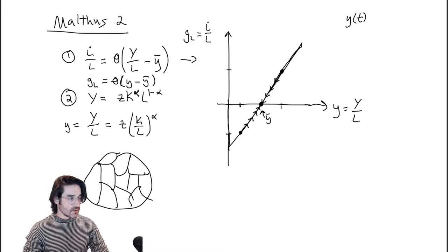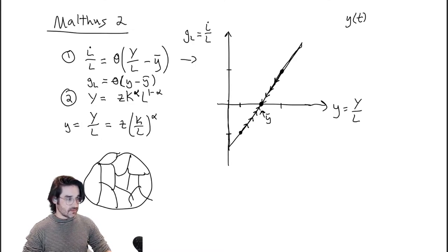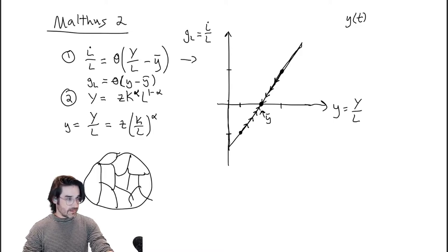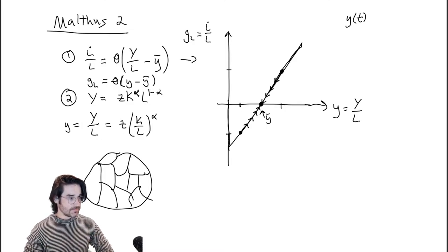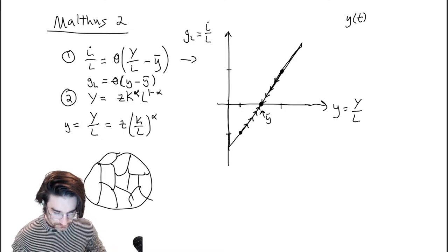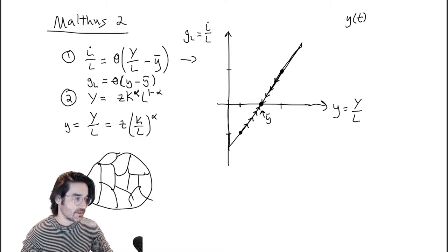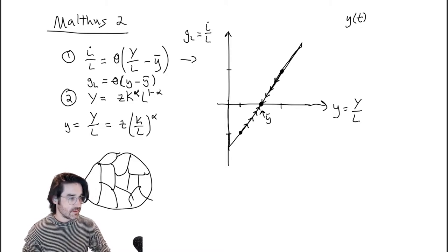The best way to solve any of this class of models is to plot the demographic rule and think through logically: I'm here — what does that imply about G-L, what does that imply about production as it evolves? Now we want to throw some additional stuff in here.